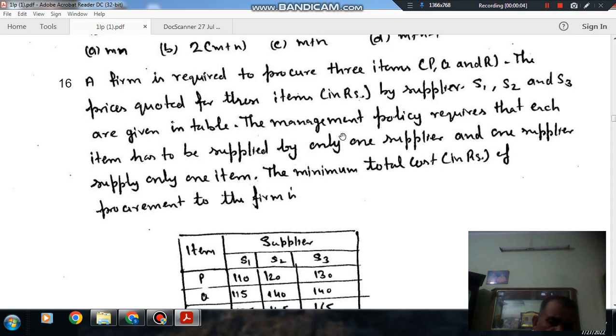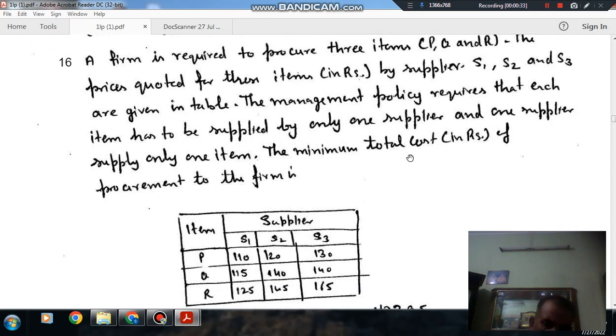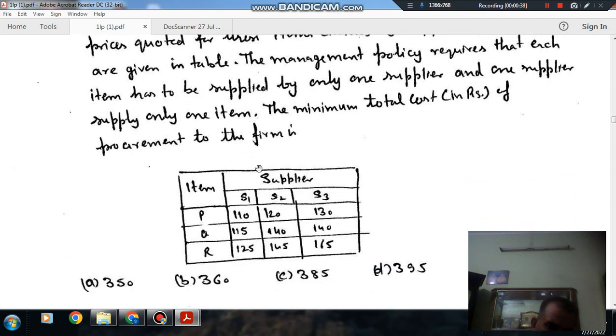Hello, welcome again. We are solving some questions of industrial engineering. The topic is linear programming. Question number 16 is: a firm is required to procure three items P, Q and R. The price quoted for these items in rupees by supplier S1, S2 and S3 is that each item has to be supplied by only one supplier and one supplier supplies only one item. The minimum total cost in rupees of procurement to the firm is: